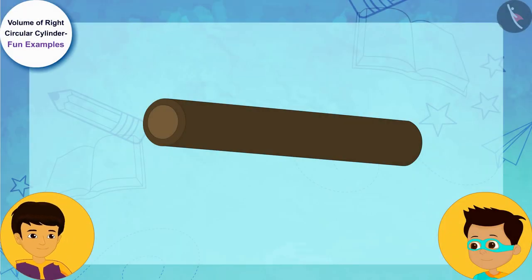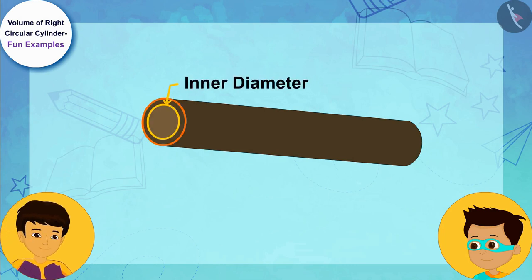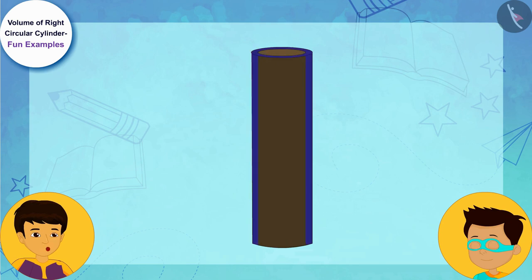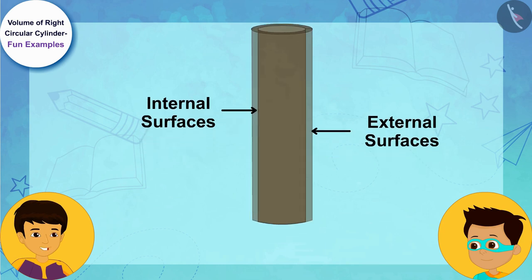Look Thomas, because the pipe has some thickness, it has two diameters. The iron required to make the pipe is occupying the space between its internal and external surfaces. Therefore, we can find the iron used to make the pipe by subtracting its internal volume from its outer volume.